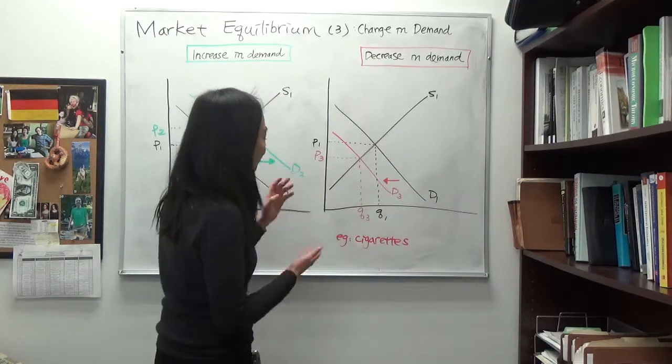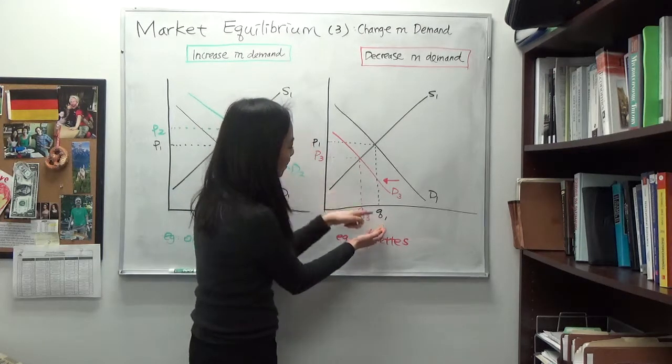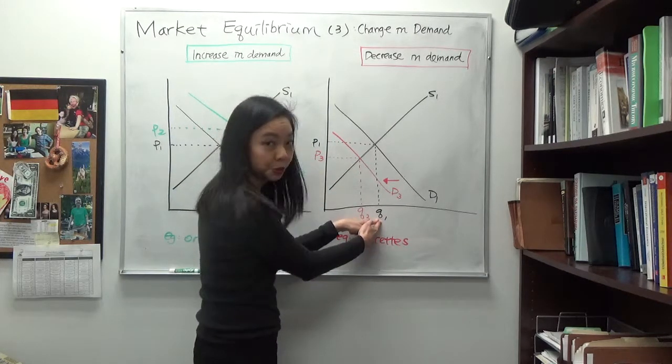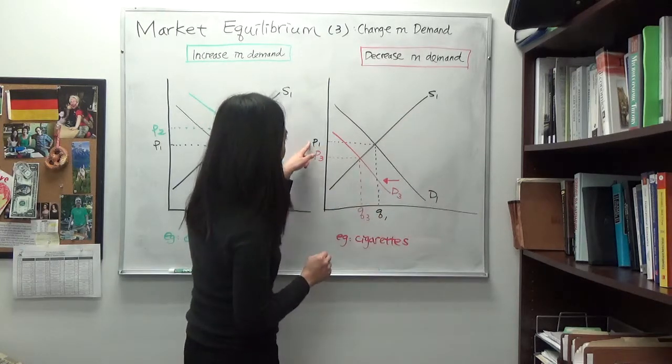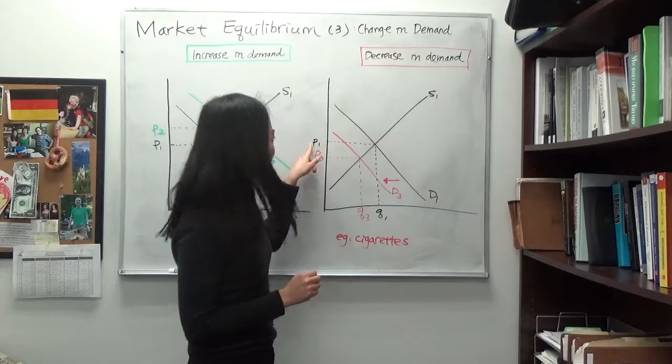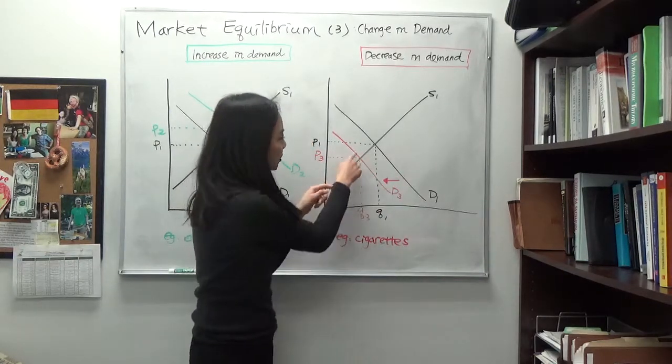Now you can see comparing to your initial quantity and price, our initial quantity is Q1, that's intersection of D1 and S1. And price was P1, that was the initial equilibrium price. And after the shift of our demand curve, you see a new intersection.